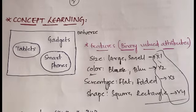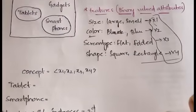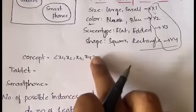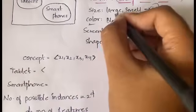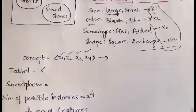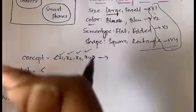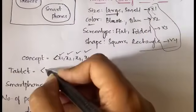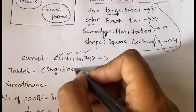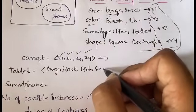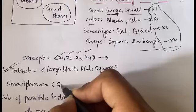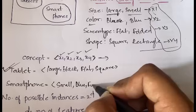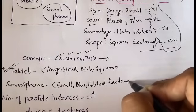Now, how do you represent the concept? The concept is represented as (x1, x2, x3, x4). That is the general representation. For a tablet specifically, it goes: large, black, flat, square. For a smartphone it goes: small, blue, folded, rectangle. That is how we represent a concept for a tablet and for a smartphone.